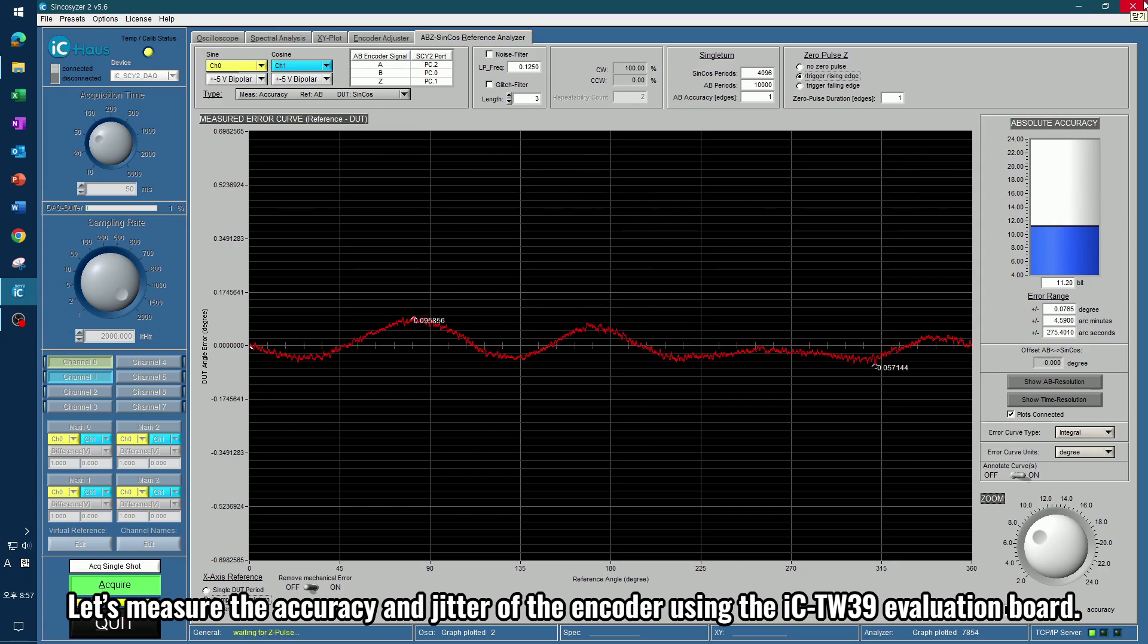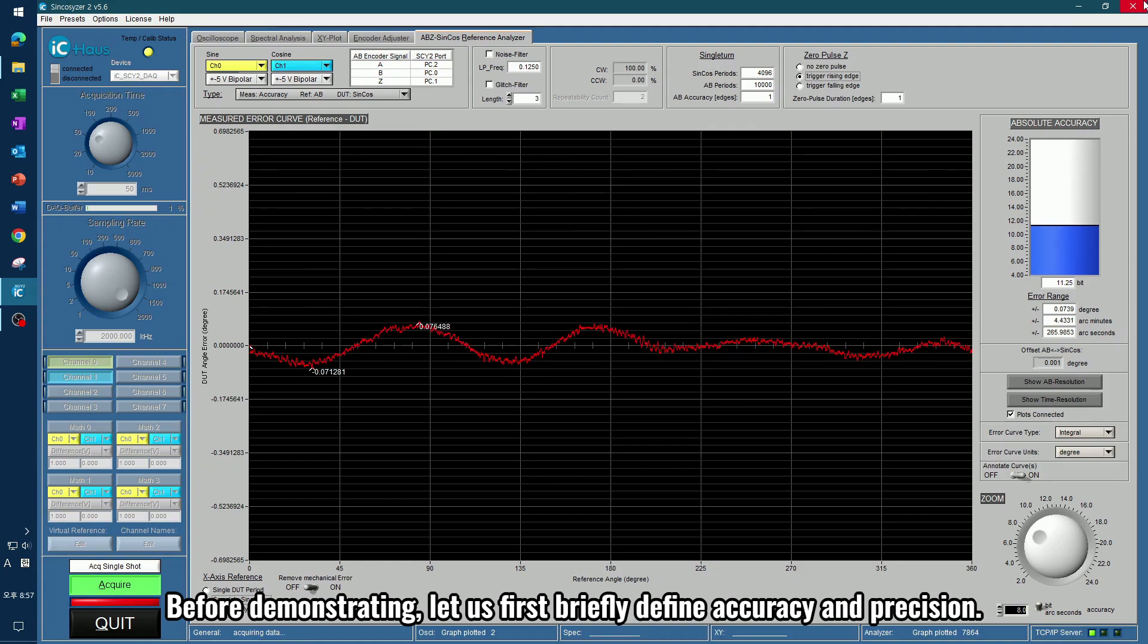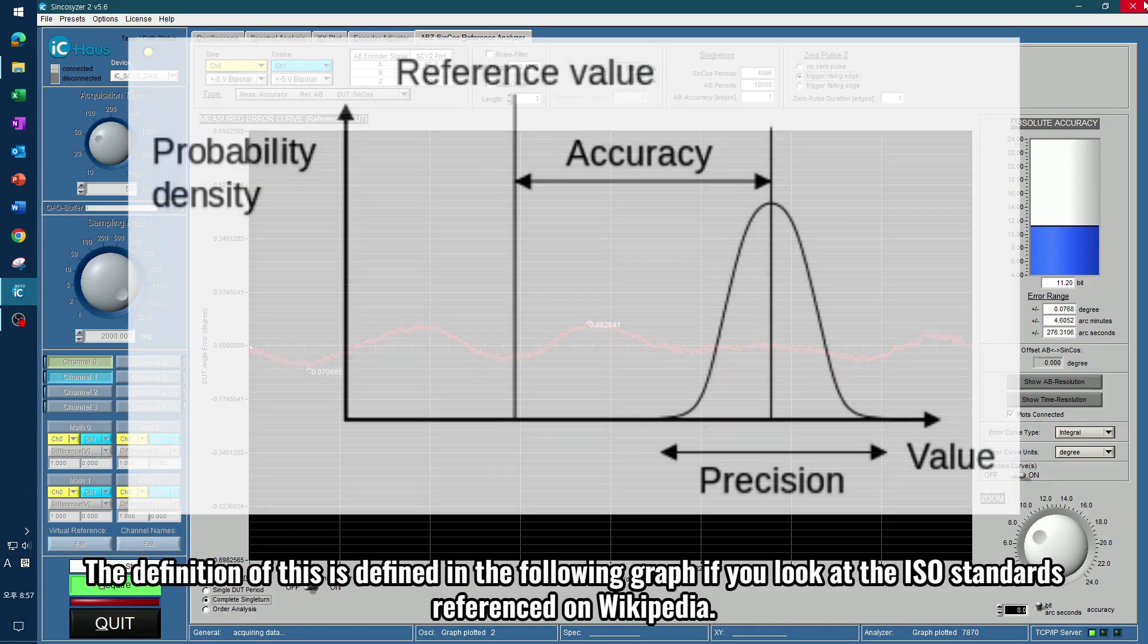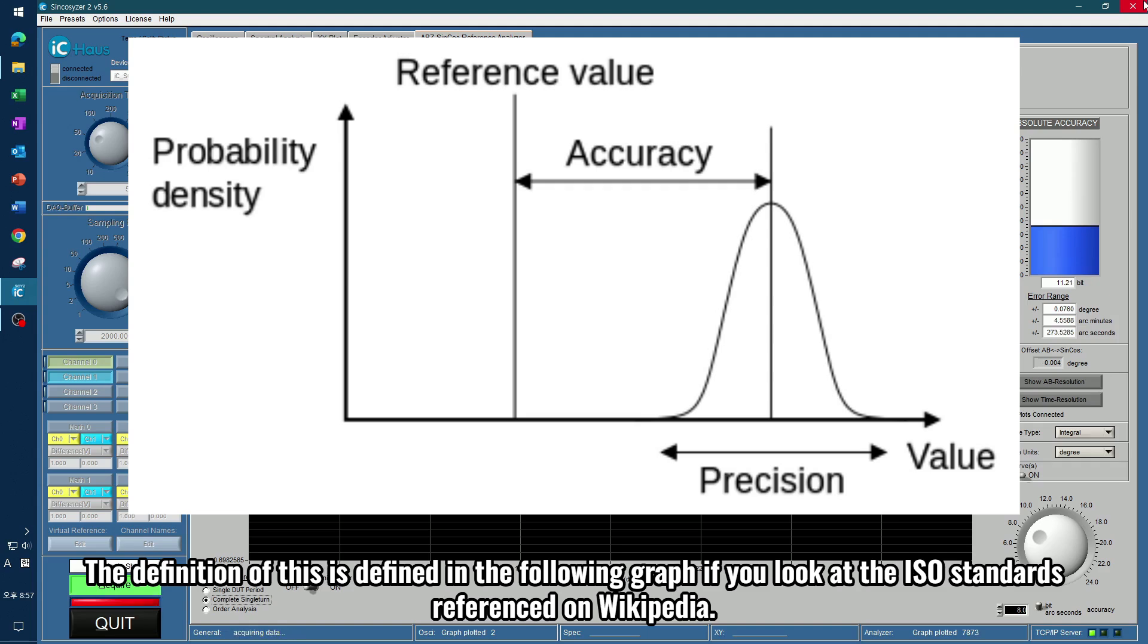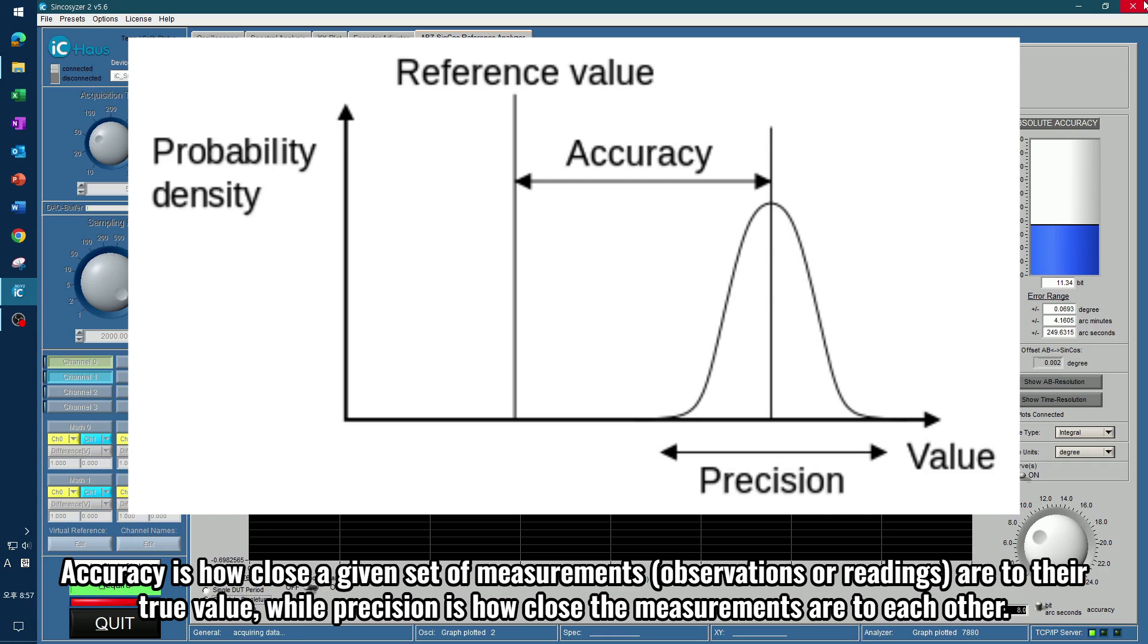Let's measure the accuracy and jitter of the encoder using the IC-TW39 evaluation board. Before demonstrating, let us first briefly define accuracy and precision. The definition of this is defined in the following graph if you look at the ISO standards referenced on Wikipedia. Accuracy is how close a given set of measurements, observations or readings, are to their true value, while precision is how close the measurements are to each other.